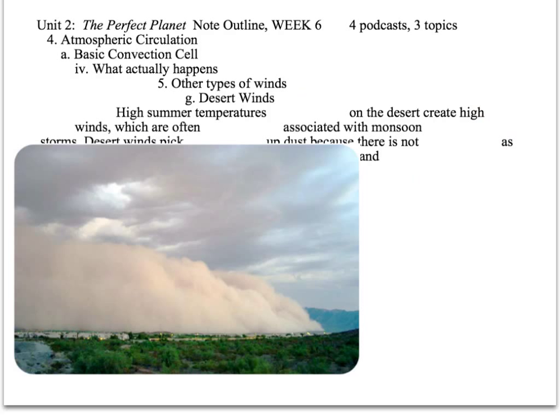Last slide: desert winds. High summer temperatures in the desert create high winds. You can see a huge wind storm — a monsoon storm — coming in. Desert winds pick up dust because there's not a lot of vegetation to hold down the dirt and sand, and you basically get a pretty nasty storm coming through with a lot of sand in the air.